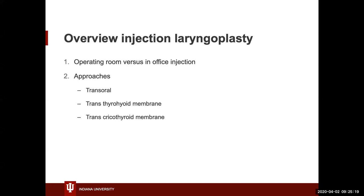There are three common approaches for in-office awake injections: the transoral approach using a long curved needle through the mouth; the trans-thyrohyoid membrane approach coming in from above the vocal fold with a scope in the nose watching the needle; and the trans-cricothyroid membrane approach, done similarly to a Botox injection. An additional approach done at other centers is injection through a channeled laryngoscope.